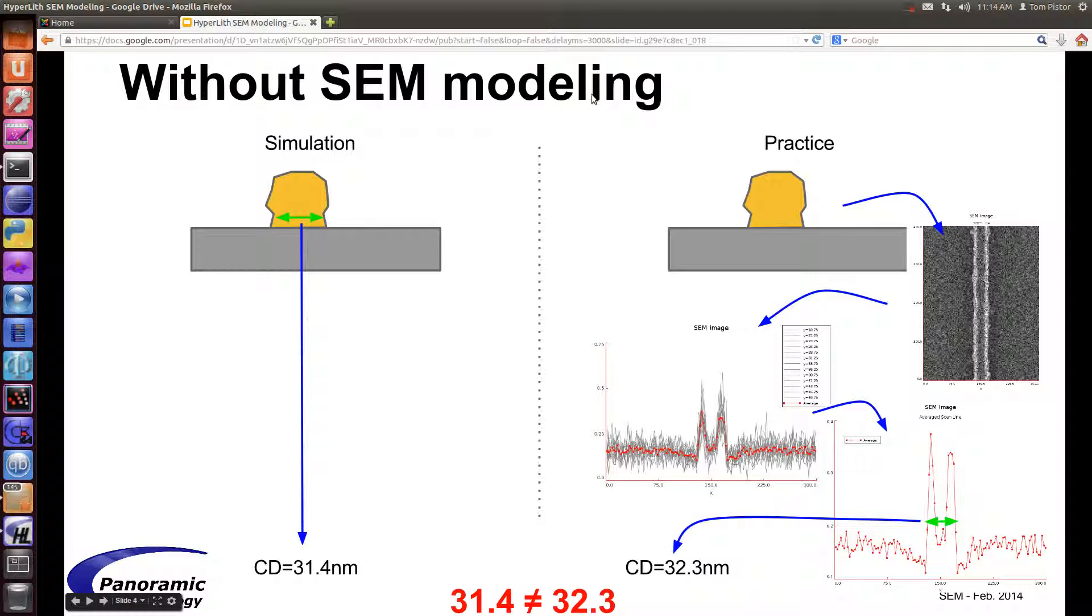Without SEM modeling, you have a resist feature which you measure at a particular location. There are different algorithms to measure, but one of the simplest is to measure at a certain height and get the width there. You get some value.